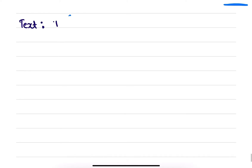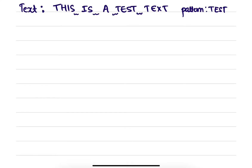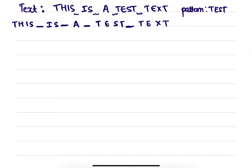Hi everyone, let's solve one more problem on Naive's algorithm. Let's make the text be: 'THIS IS A TEST TEXT' — you can see I have involved white spaces here, so you have to consider these white spaces also. Let the pattern be 'TEST'. Now let's solve this. I'll write: T H I S space I S space A space T E S T space T E X T.